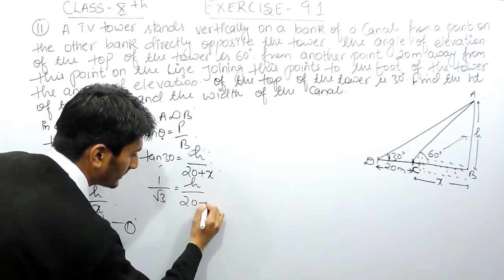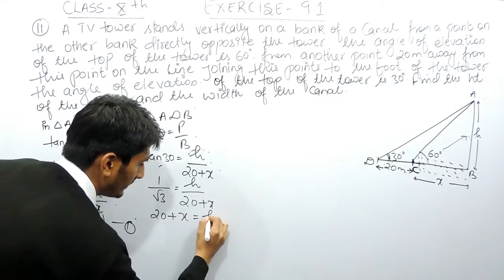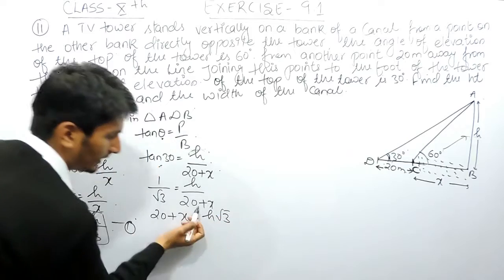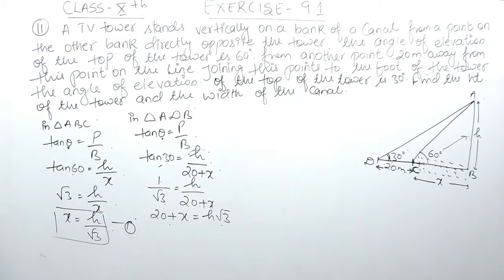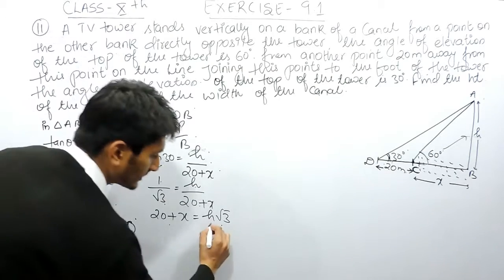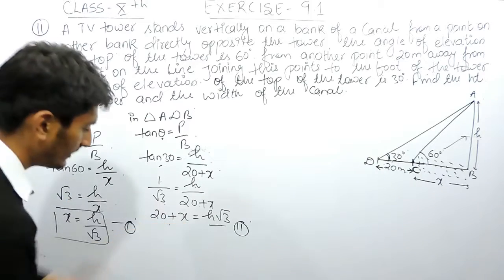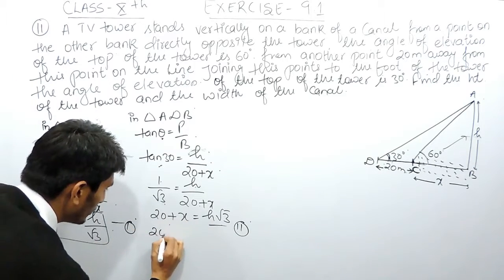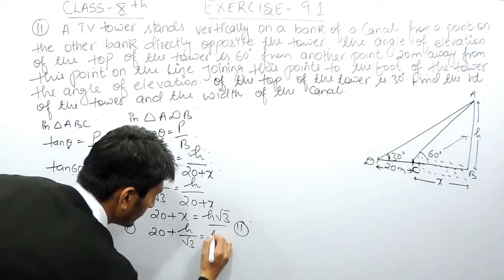So tan 30° = h/(20 + x). The value of tan 30° is 1/√3, so 1/√3 = h/(20 + x). Cross multiplying gives 20 + x = h√3. This is our second equation. Now I substitute the value of x from the first equation (x = h/√3) into this second equation.